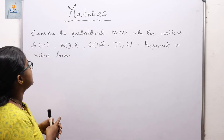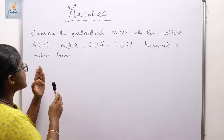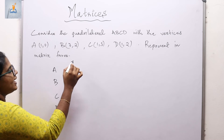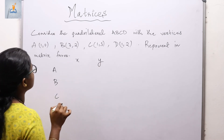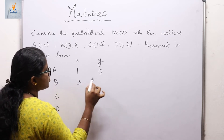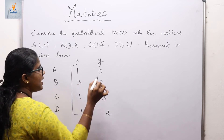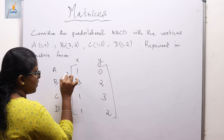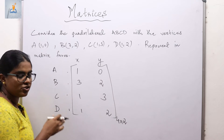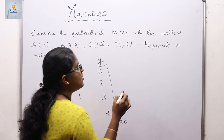Here is an example: consider quadrilateral ABCD with vertices A(1,0), B(3,2), C(1,3), and D(1,2). We need to represent this in matrix form. The x and y coordinates are given for each vertex. The rectangular representation with 4 rows and 2 columns is an example of a 4 by 2 matrix.